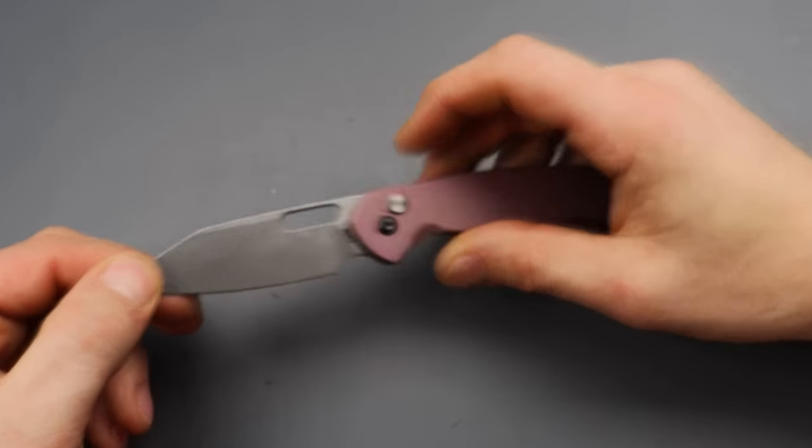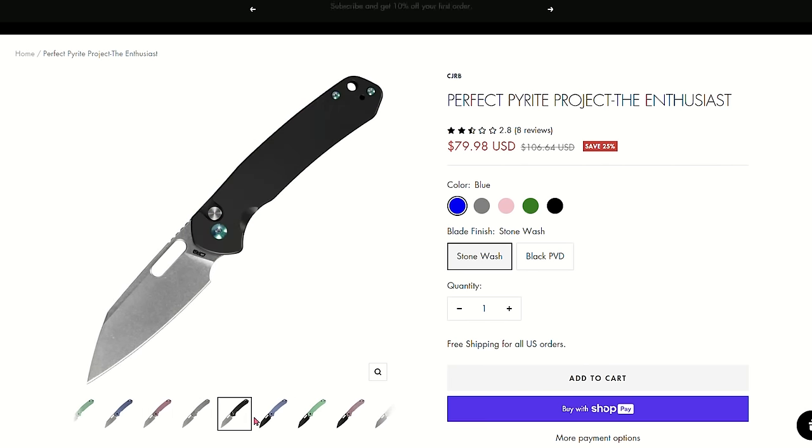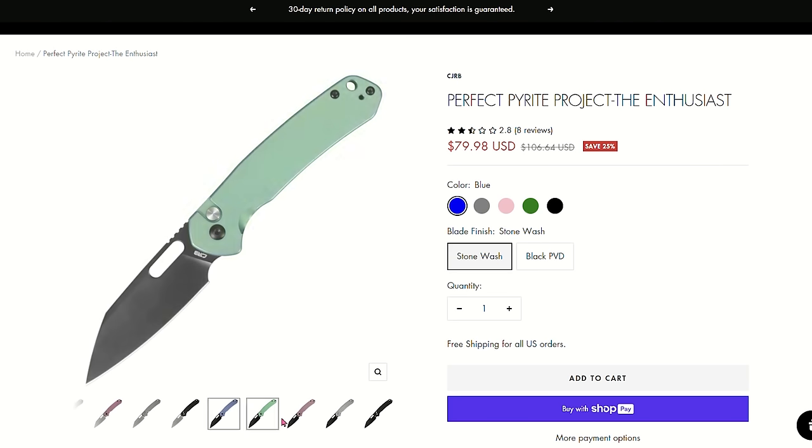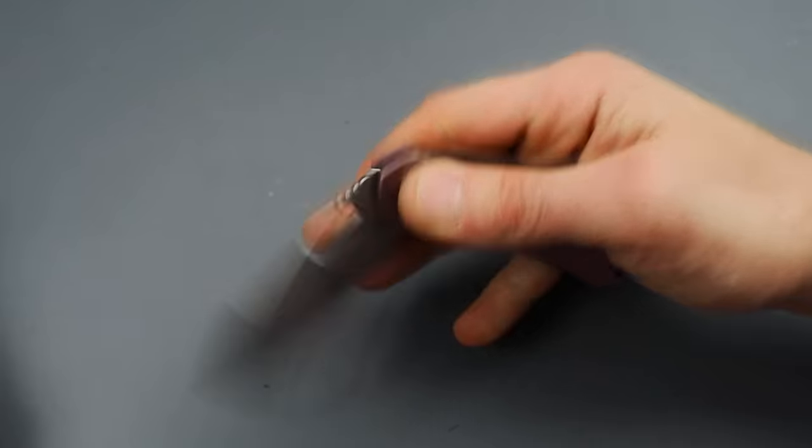Let's get to the next one. Next is CJRB, the titanium pyrite. Now, this comes in all different colors. Like, lots of different color options. And I'm pretty sure you can even get the titanium mill pocket clip to attach to it. I know I got one. This is the ARRPM9 steel one. And these things are only like 80 bucks.